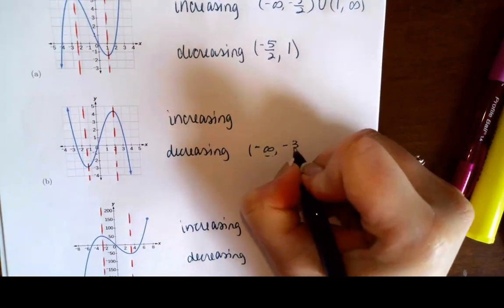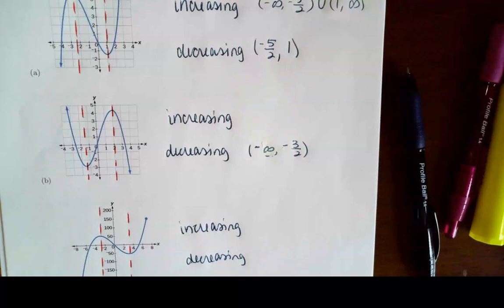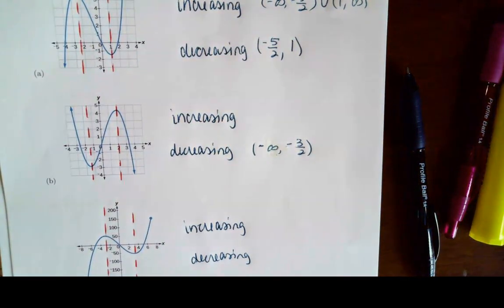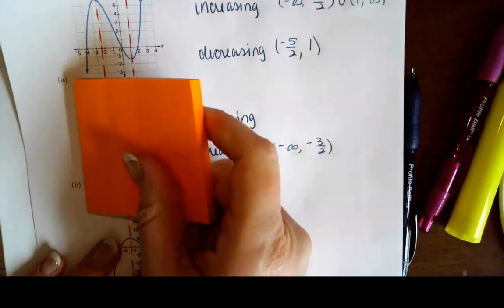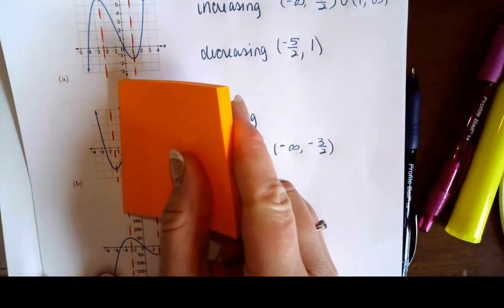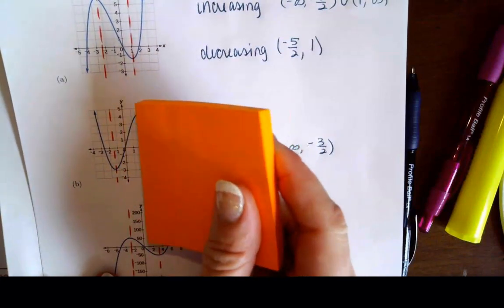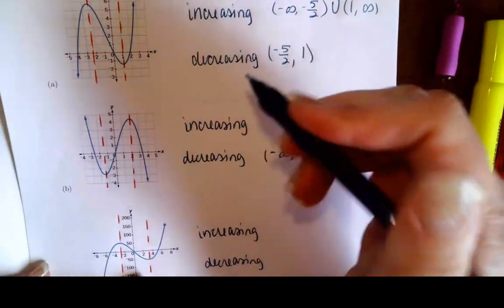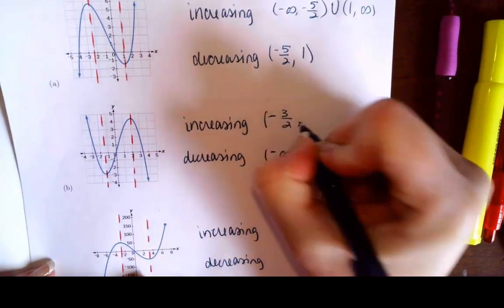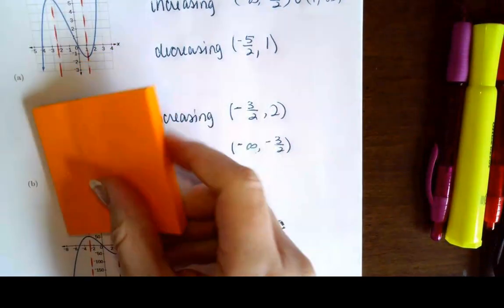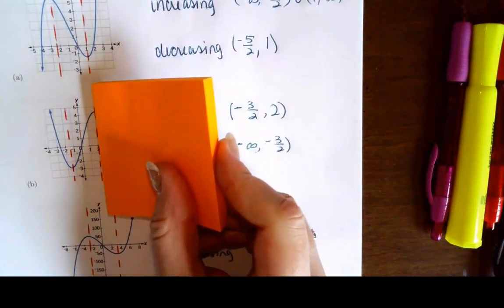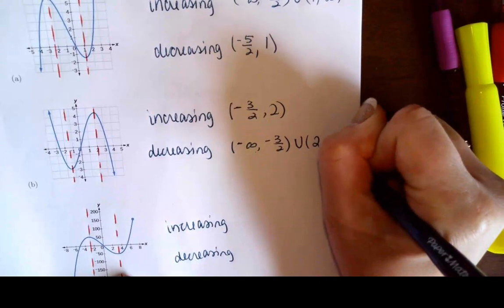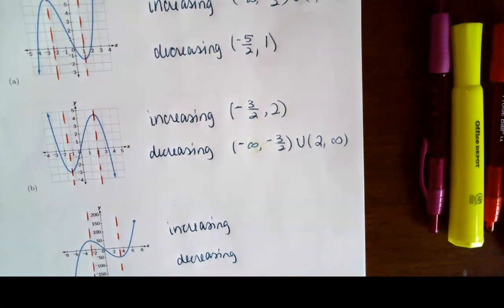From negative infinity to negative three halves, he is decreasing. Then from negative one and a half until two, he's going up — so he's increasing from negative three halves until positive two. Then starting at an x value of two, he's going to drop downward for the rest of his life, so from two to positive infinity, he will be decreasing.